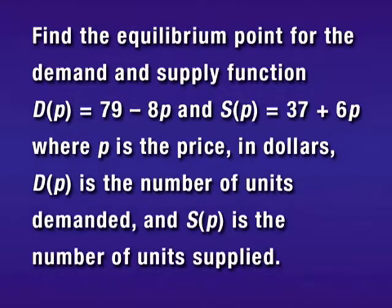Find the equilibrium point for the demand and supply functions D(p) equals 79 minus 8p and S(p) equals 37 plus 6p, where p is the price in dollars, D(p) is the number of units demanded, and S(p) is the number of units supplied.